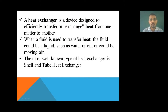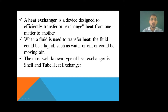I will explain this in detail in the next slide. When a fluid is used to transfer heat, the fluid could be a liquid such as water or oil, or could be moving air. That may be hot water or oil acting as a hot stream, or moving air also acting as a hot stream. We can use liquid or gaseous phase as a hot stream. The most important heat exchanger used in industry is the shell and tube heat exchanger. In this heat exchanger, a key part is the baffle, which is used to increase turbulence and increase the rate of heat transfer.